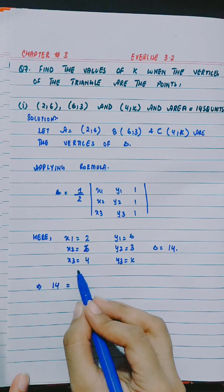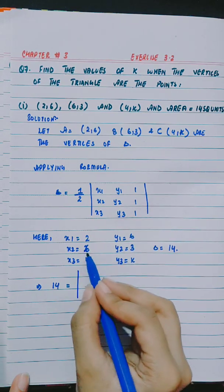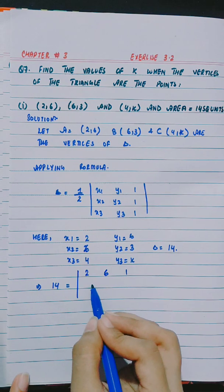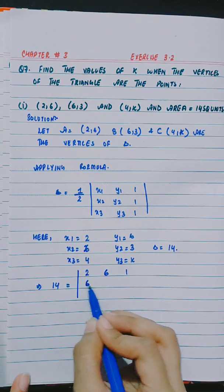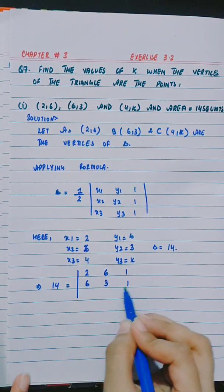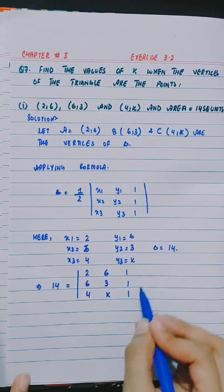14 is equal to mod of the determinant: 2, 6, 1, 6, 3, 1, 4, k, 1.